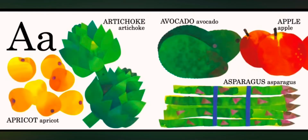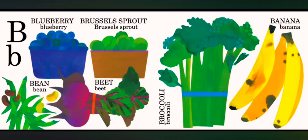A is for apricot. A is for artichoke. A is for avocado. A is for apple. A is for asparagus.